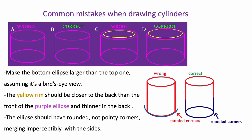Here are some common mistakes when drawing cylinders. Don't have both ellipses the same size. Usually the bottom one is rounder than the top for a bird's eye view. If we're looking up at the cylinder it would be the top one that would be rounder. The rim should be closer to the back of the cylinder than the front and it should be thinner in the back and the ellipse should have rounded corners that merge with the sides rather than pointy corners.